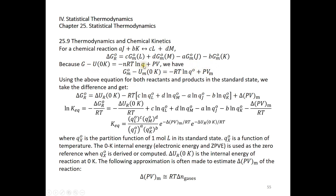We use this equation divided by the number of moles, and apply it for all reactants and all products. Taking the difference between products and reactants, we get the standard Gibbs energy of reaction equal to the 0K internal energy of the reaction, minus RT times the logarithms of the partition functions of the products minus the logarithms of the partition functions of the reactants, accounting for the coefficients.